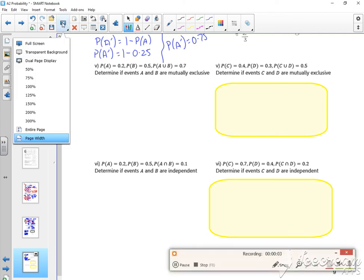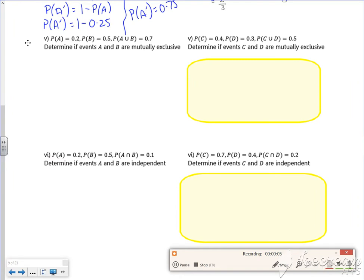Right then, back on video 1 million coming up. So it says A is 0.2, B is 0.5, A or B is 0.7, and I need to determine whether they are mutually exclusive. So I know that if they're mutually exclusive, the probability of A or B equals A and B.